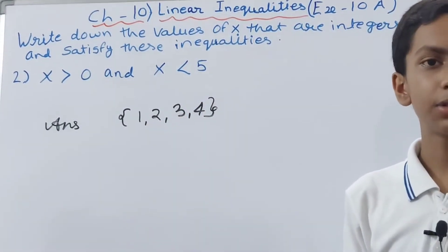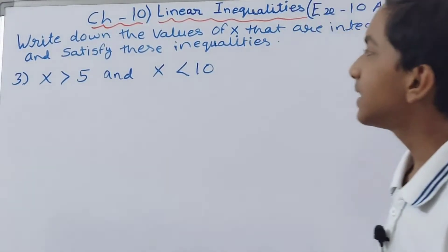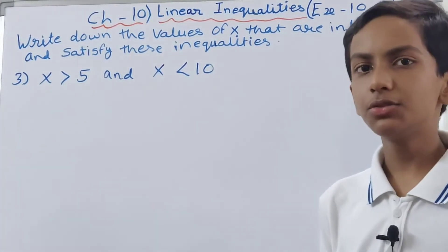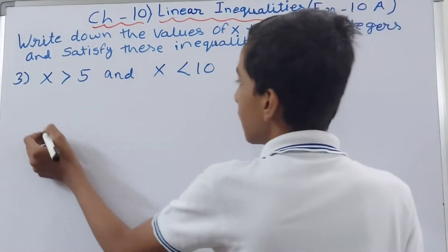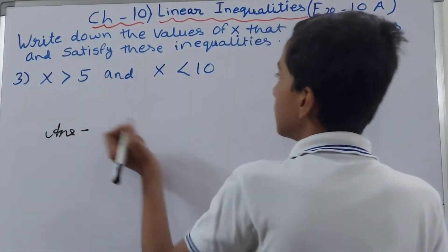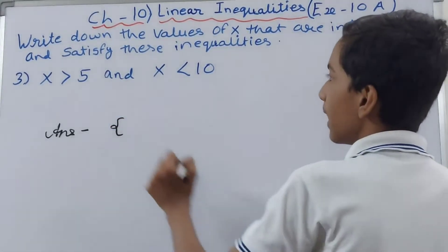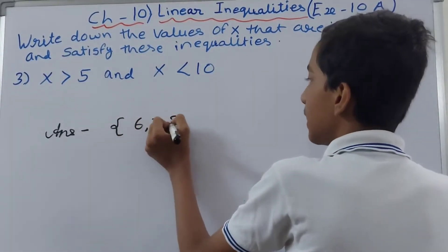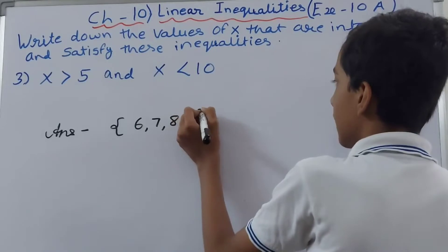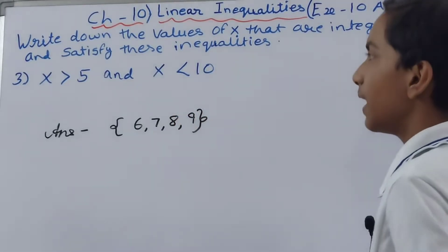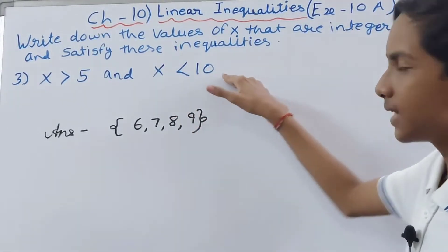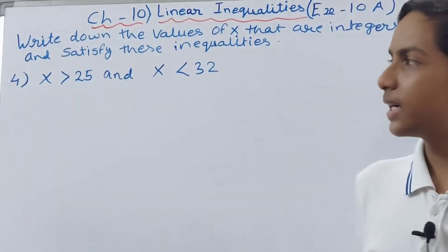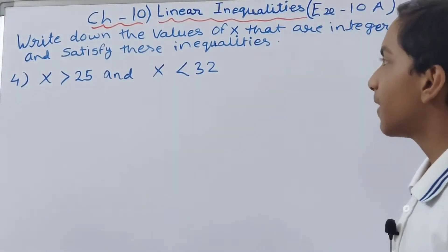The third part: x is greater than 5 and x is less than 10. The value of x has to be more than 5, so we open the curly brackets and start from 6, 7, 8, 9. Nine is the last number because x has to be less than 10, so we cannot write 10. The answer is {6, 7, 8, 9}.